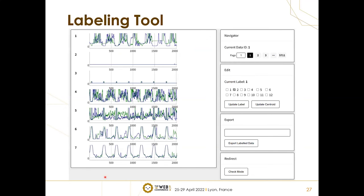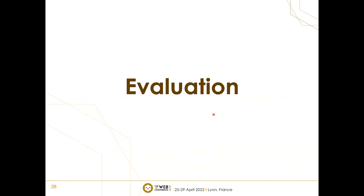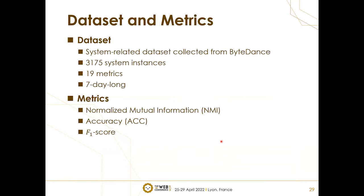This figure shows the user interface of our labeling tool. It can create new classes, update centroids, and modify class labels. We have conducted extensive experiments to evaluate the performance of Omni-cluster. The dataset is collected from a top-tier global content service provider. Specifically, the original data is seven-day-long MTS segments collected from 3,175 system instances, sampled at an interval of one minute, and each instance has 19 metrics. We adopt two clustering-related metrics, namely NMI and ACC, to measure the performance of Omni-cluster. In addition, we use F1 score to evaluate Omni-cluster's ability to detect outliers.